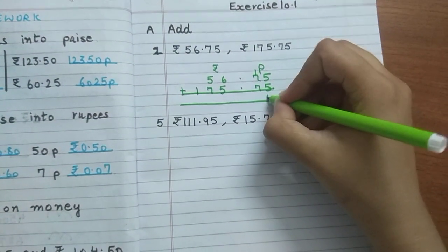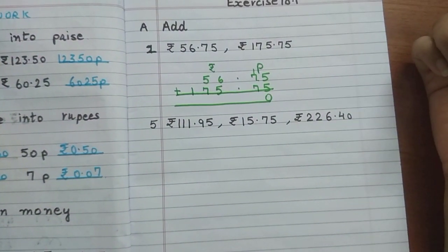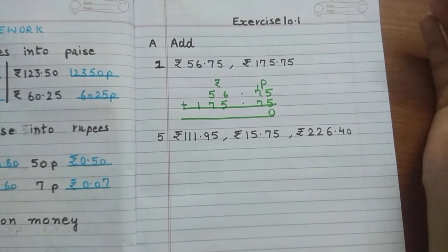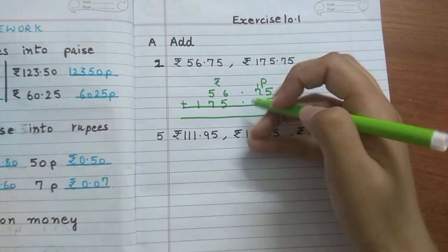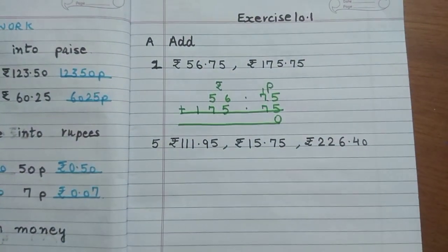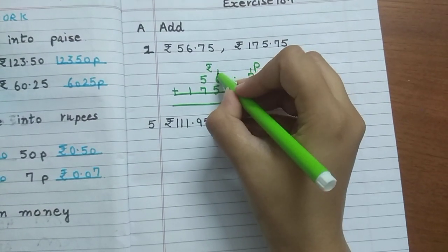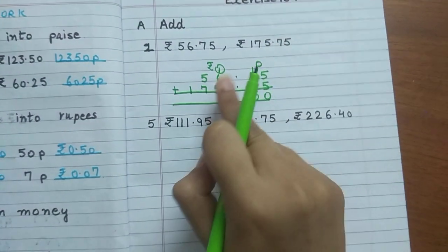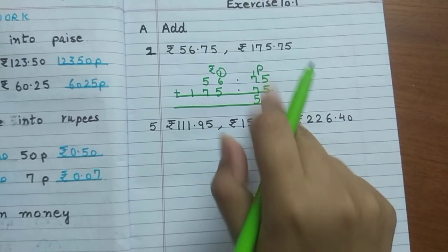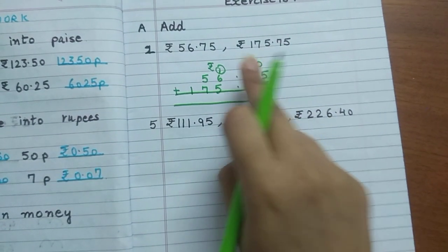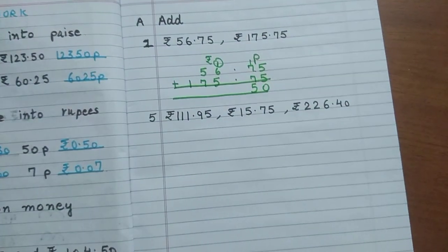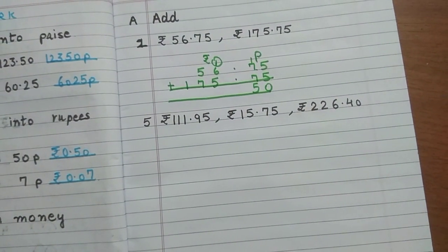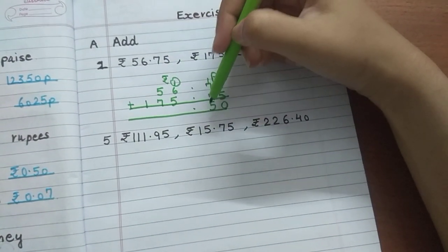7 plus 7. Count after 7: 8, 9, 10, 11, 12, 13, 14. 14 plus 1 is 15. 15 will not go here. 1 will go up and 5 will stay down. In paisa there is place for only 2 digits. So 1 will go up and 5 will stay down. Paisa cannot have 3 digit numbers on this side of the column.